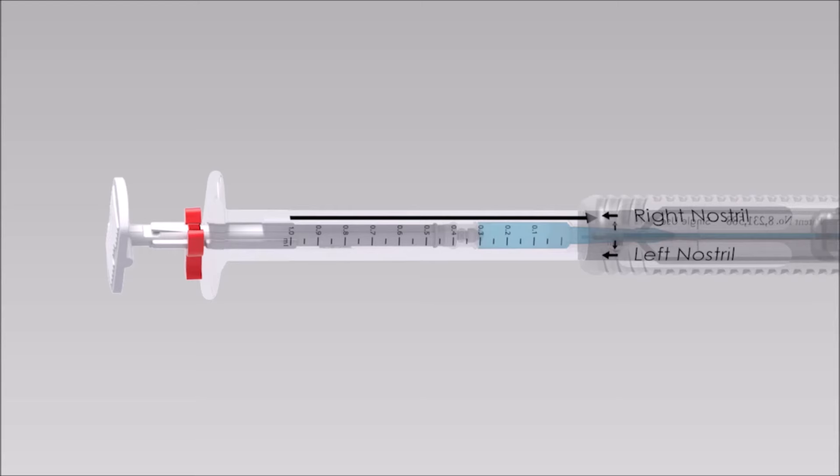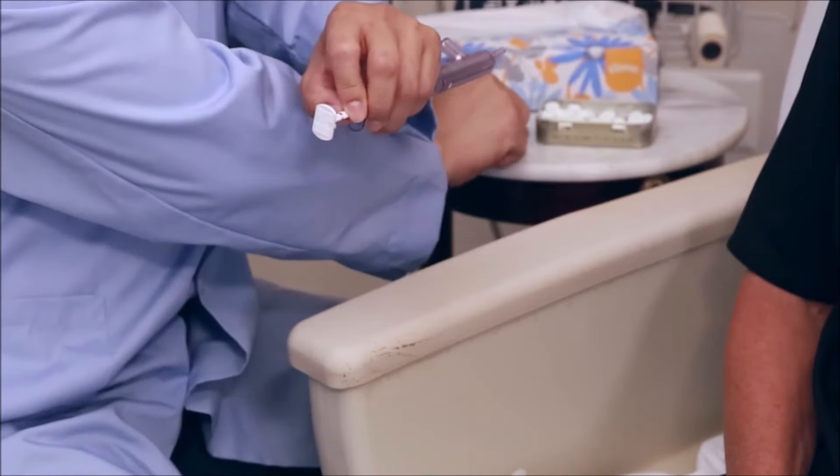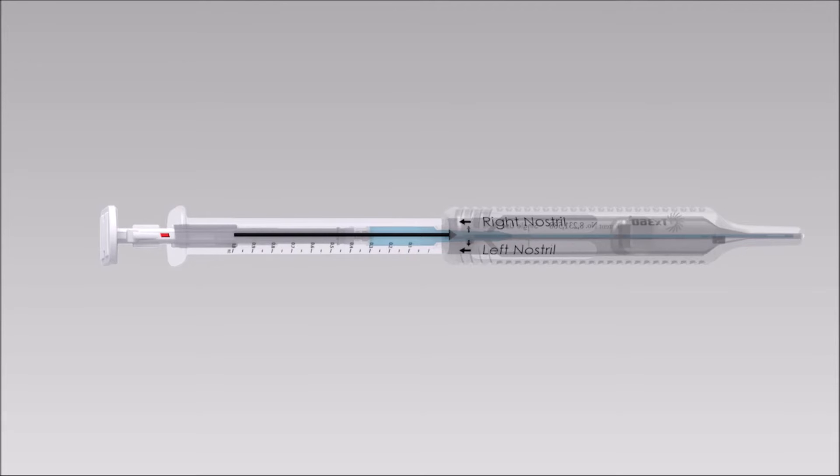We're now ready to proceed to the left nostril. Start by removing the limiting shipping clip from the halfway point on the plunger. You are now ready to reposition the syringe on the left nostril. With the entire syringe back to neutral position,